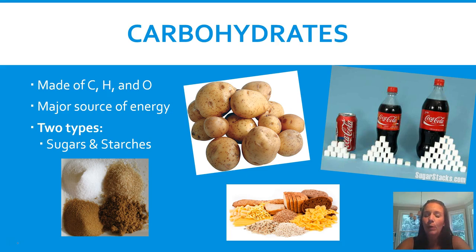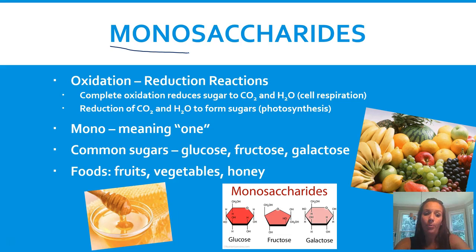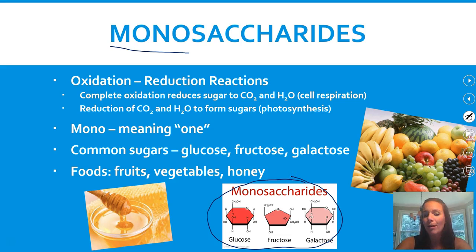First up: carbohydrates. Carbon, hydrogen, and oxygen are the three major elements in carbohydrates, and they're a major source of energy. Two major types are sugars and starches. There's something called a monosaccharide — mono meaning one and saccharide meaning sugar. These sugars go through oxidation-reduction reactions in cell respiration and photosynthesis. Common monosaccharides include glucose, fructose, and galactose — things you see on food labels. Examples of foods are fruits, vegetables, and honey. In the picture, you can see these sugars in the ring formation that carbon can make.